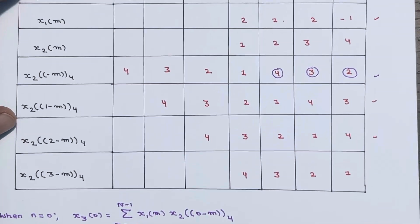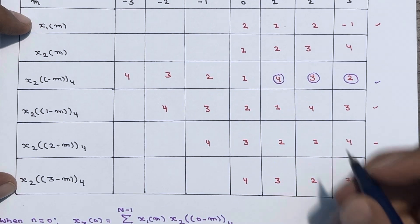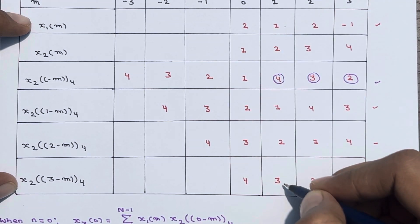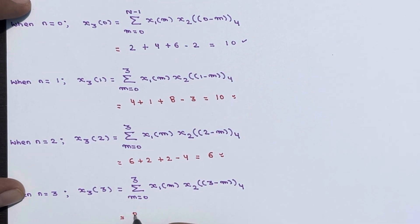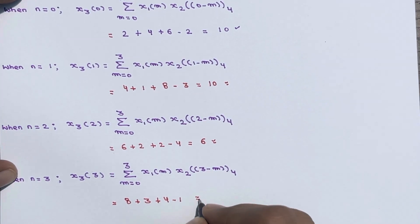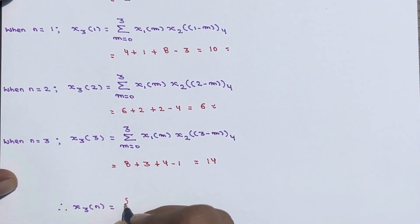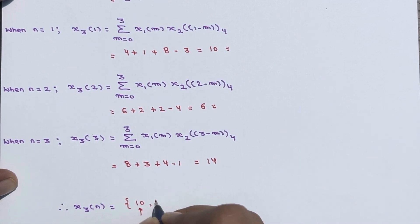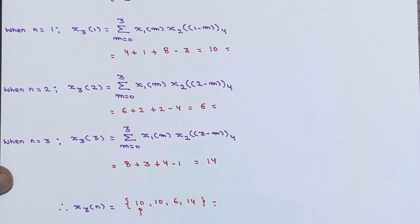When n=3, we need x1(m) and x2(3-m). Multiplying element-wise and summing: 2×4 + 1×3 + 2×2 + (-1)×1 = 8 + 3 + 4 - 1 = 14. So x3(3) = 14. The final output x3(n) = {10, 10, 6, 14}. This is the result of circular convolution using the tabular method. If you have any doubts, ask in the comment section.